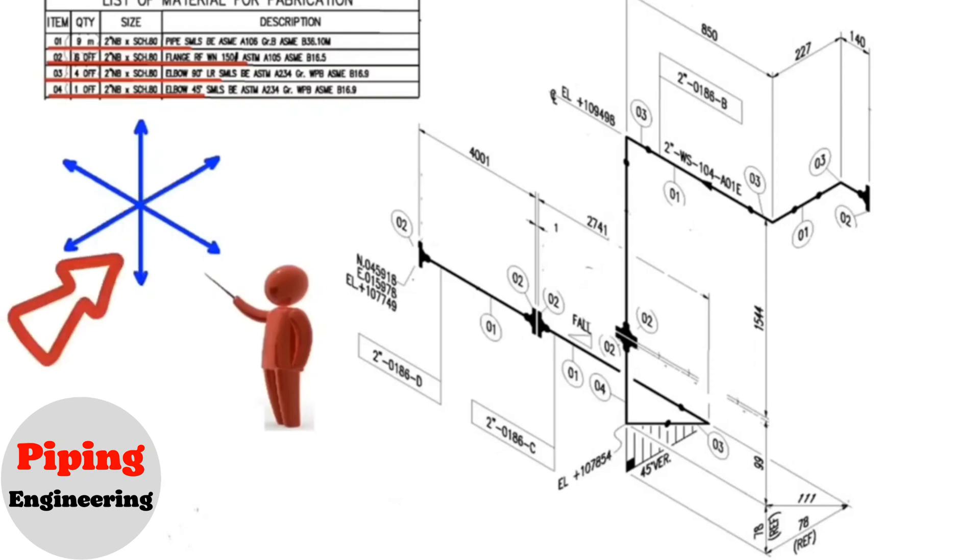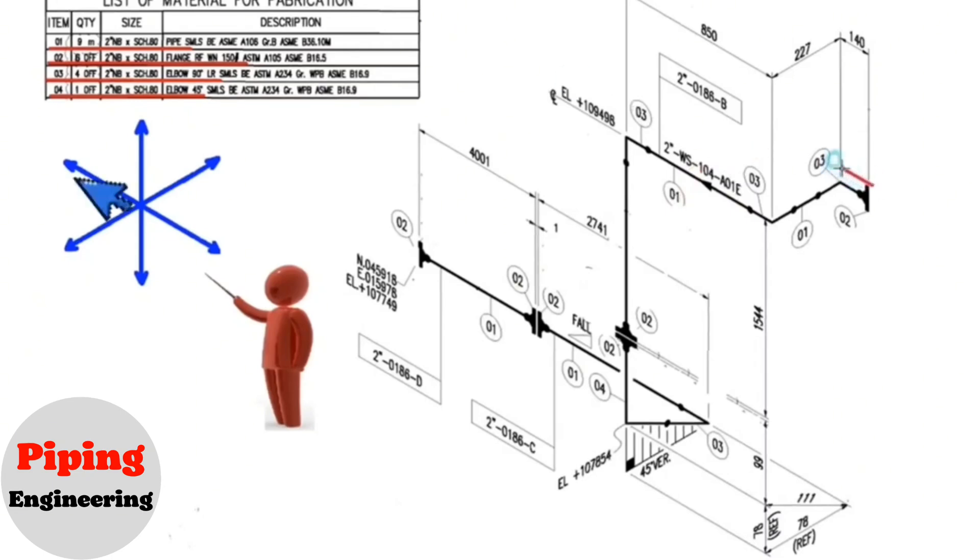Let's read the pipe drawing with the help of these directions. There is an arrow on the pipe, so let's read the pipe drawing in that direction. First, the pipe goes to the north.